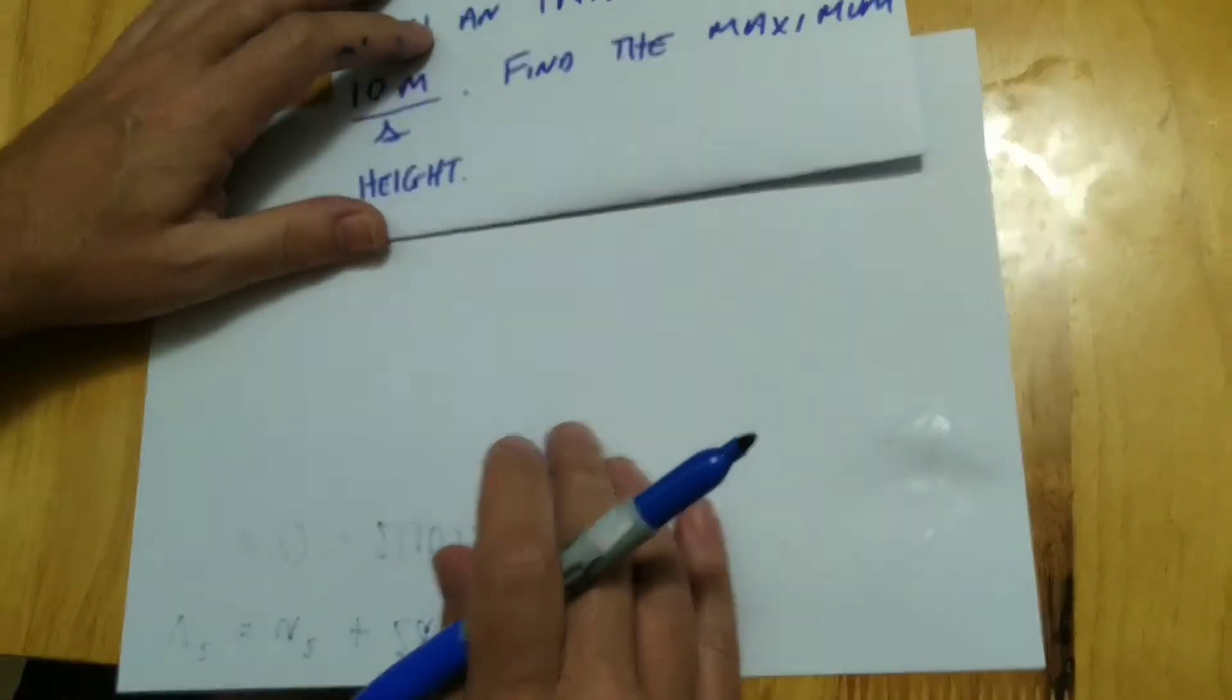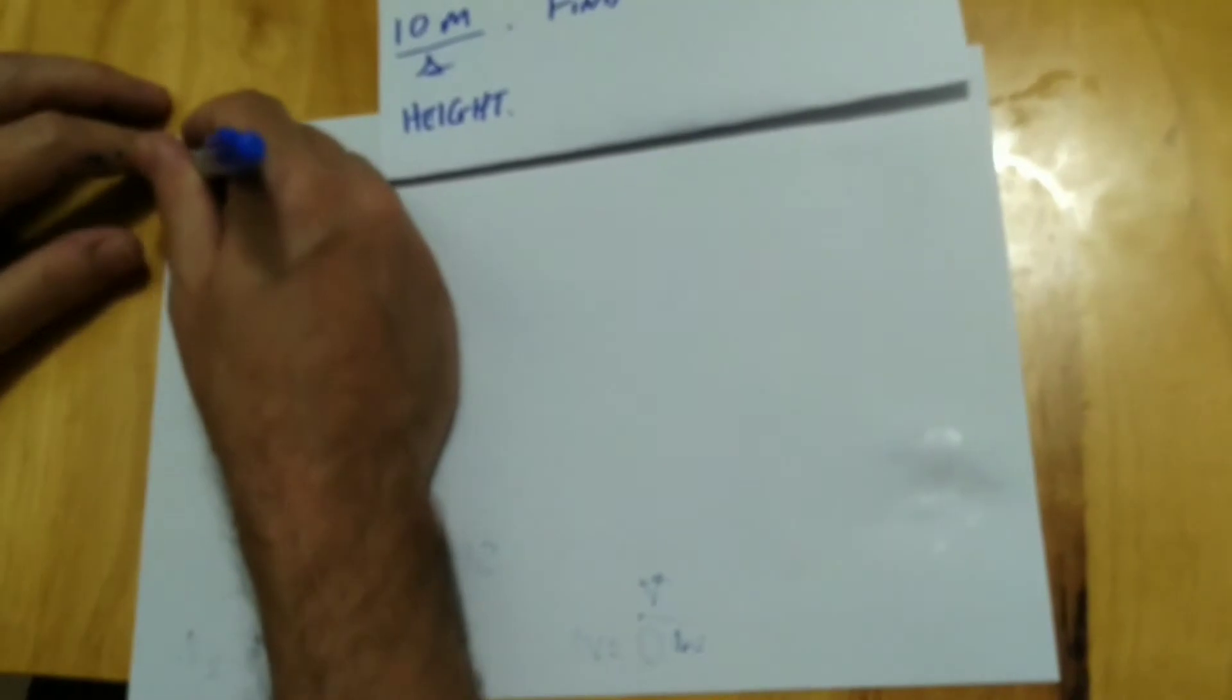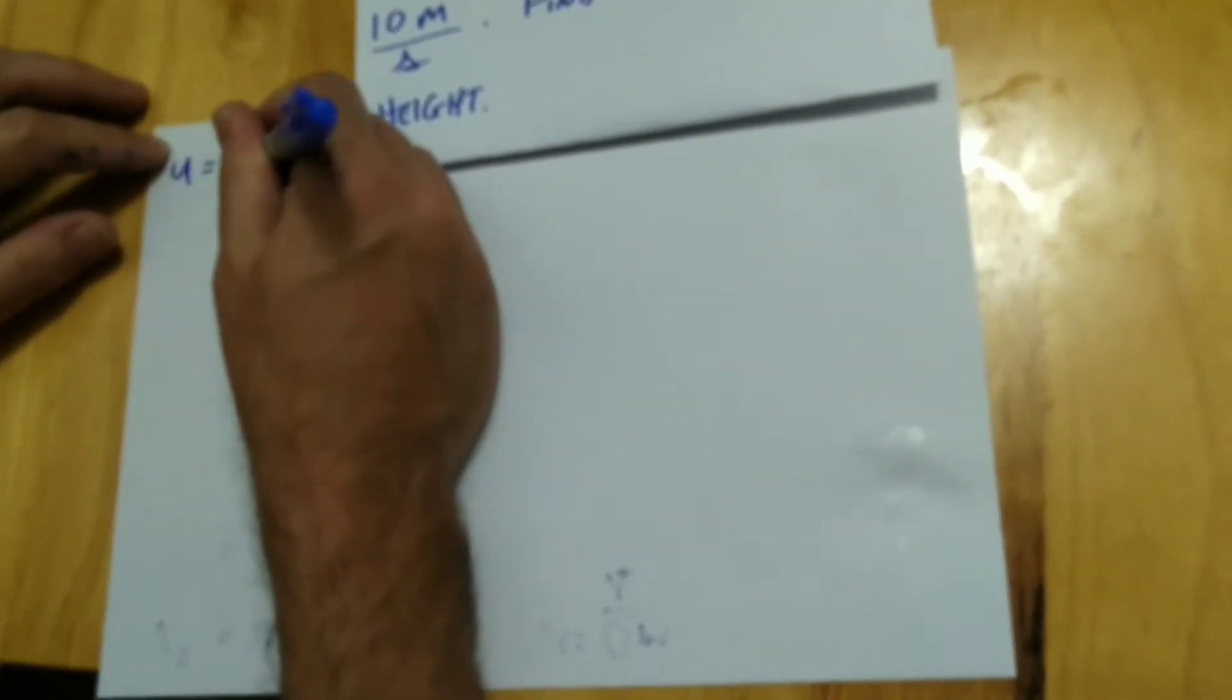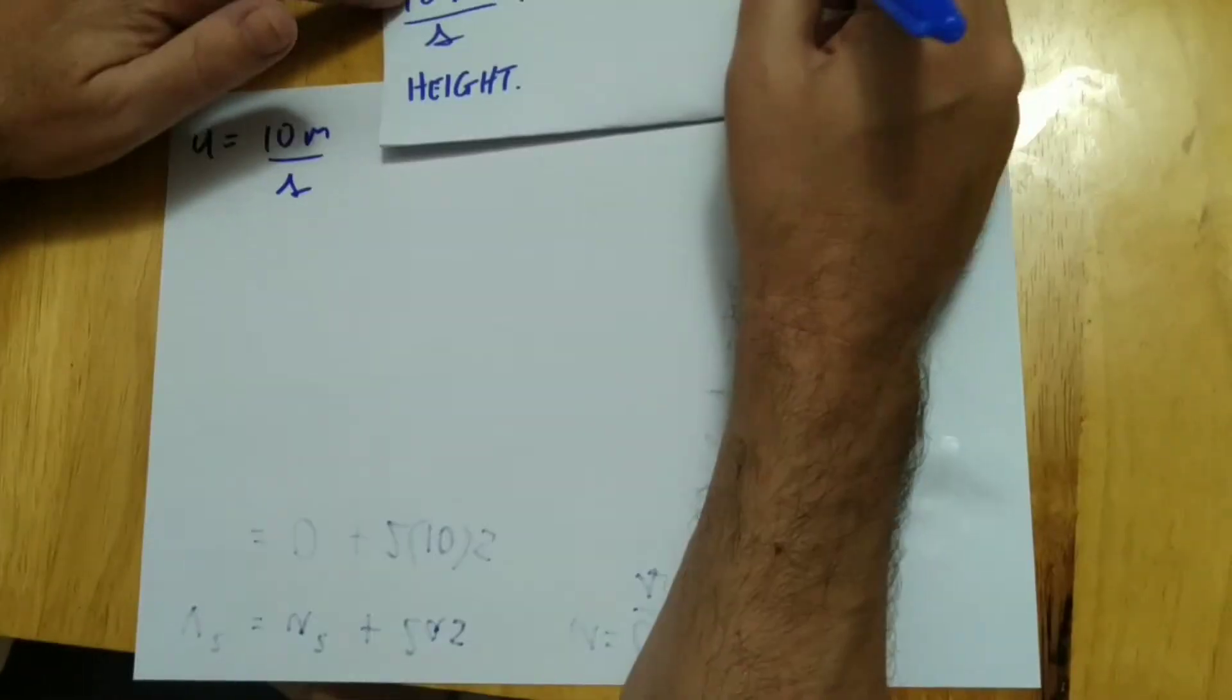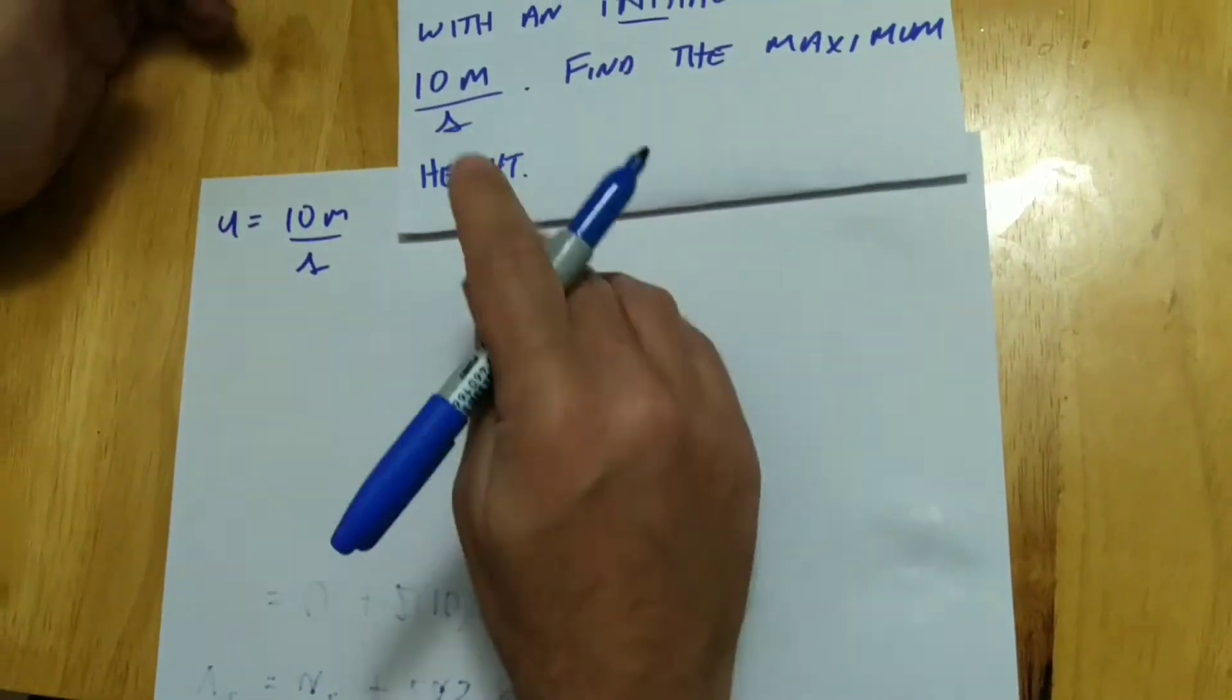Whenever you hear that, just don't waste any time. u is equal to 10 meters per second. And the reason is because it says initial. So that means your initial velocity.